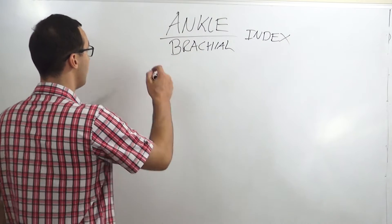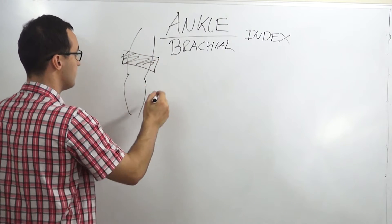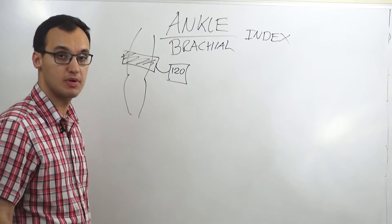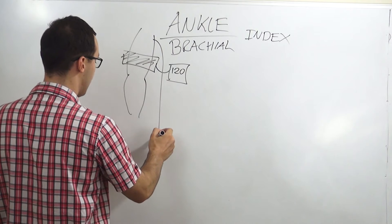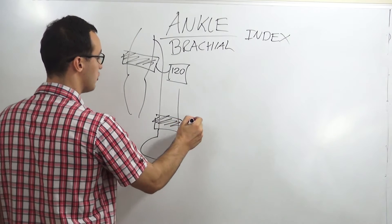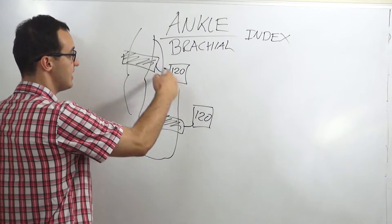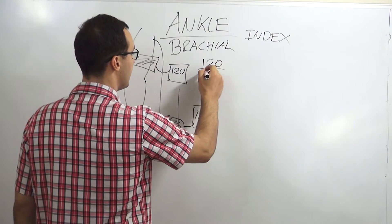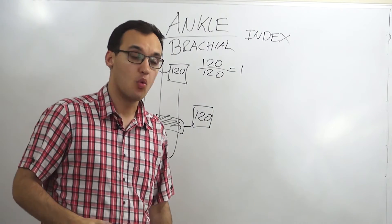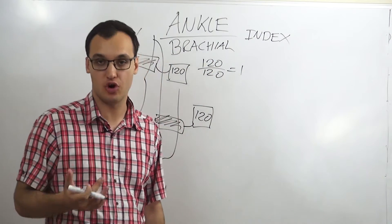For example, if you have a blood pressure cuff on your arm and you measure 120, and then down on your lower legs you also put a cuff and measure a blood pressure of 120, then the index is 120 divided by 120, which gives an index of 1. This is usually normal — an index of 1 means you don't have peripheral artery disease.